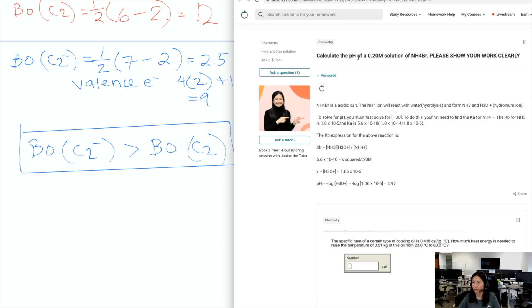Okay, so we have to calculate the pH of a 0.20 molar solution of NH4Br, and you need to show your work clearly.